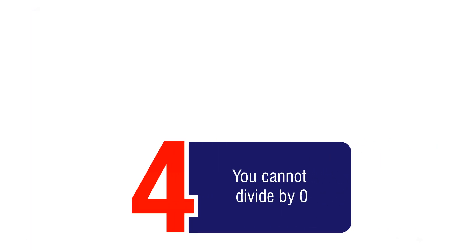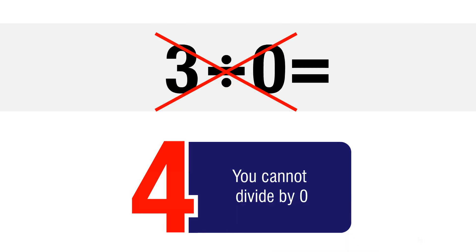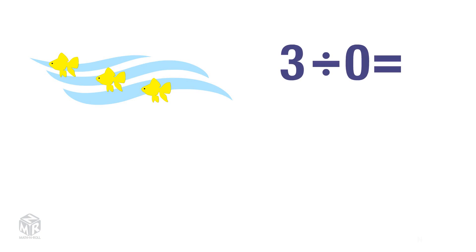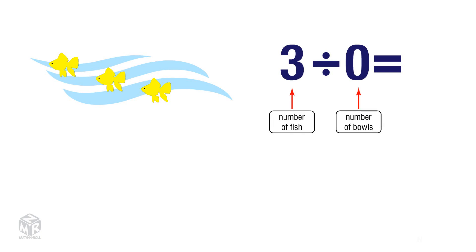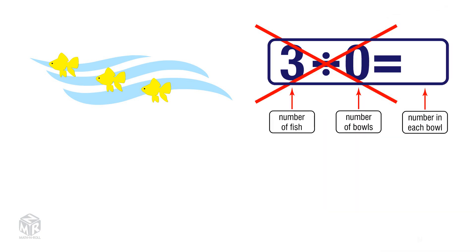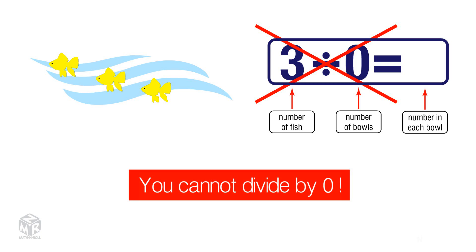Our last rule says that you cannot divide by zero. Let's say we have three fish and zero bowls. Three represents the number of fish, and zero represents the number of bowls. We can't divide by zero because we cannot put fish into tanks that don't exist. So you can't divide three by zero — just remember, you cannot divide by zero.